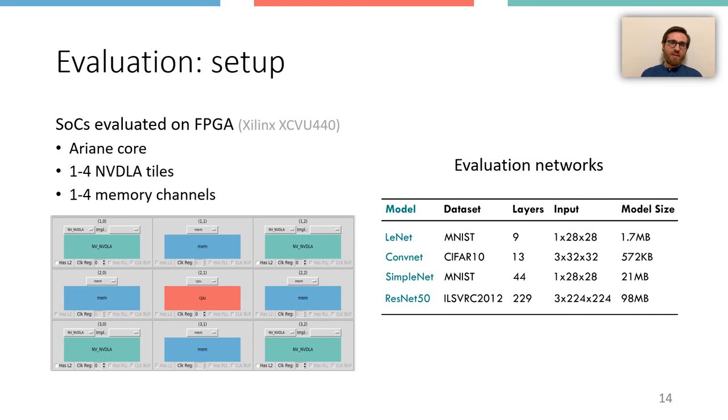The table on the right shows the specifications of the four neural networks for image classification that we used for the evaluation. They represent a good range of network sizes, where the biggest network is ResNet50 with 229 layers and a 98 MB model.